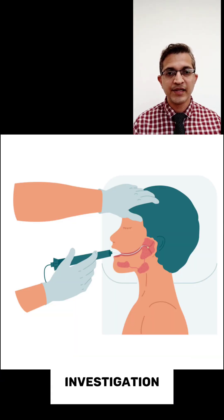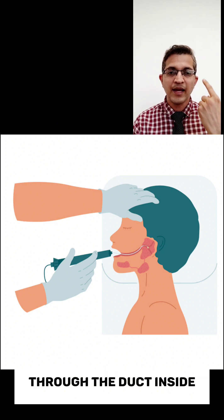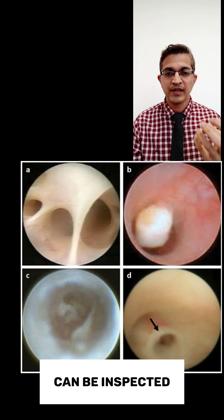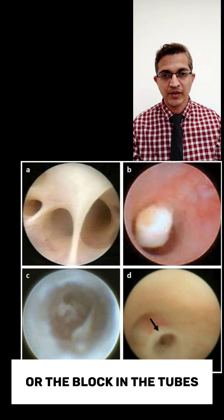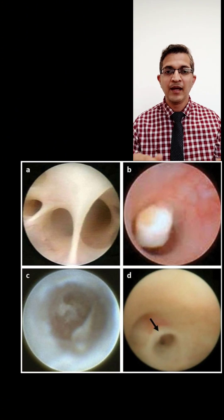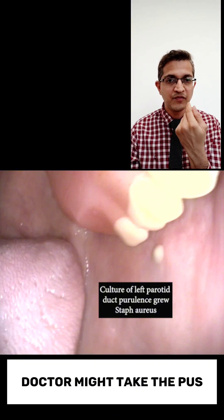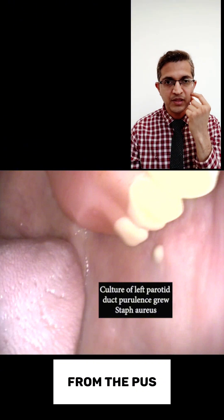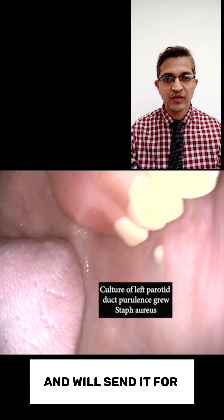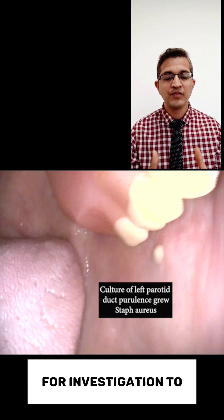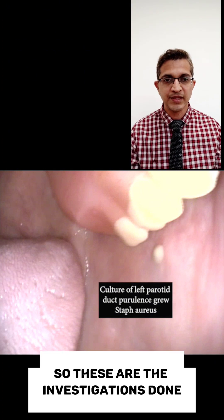Sialendoscopy is another investigation where a small camera and tube is inserted through the duct. The duct can be inspected, and it also helps in relieving any obstruction or blockage. Another investigation is pus culture and sensitivity — the doctor takes pus from inside the mouth, from the pus coming from the duct of the parotid gland, and sends it for investigation to identify what bacteria is involved.